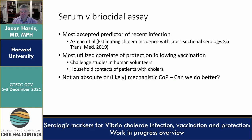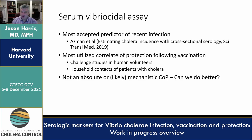The vibriocidal assay is probably the best accepted predictor of recent infection, even to the point where it's used as a diagnostic test in some rare circumstances. Work by Andrew Asman, Daniel Leung, and colleagues showed that this was probably the best tool for sero-epidemiology, in combination with other markers like the cholera toxin response. It is also the most utilized correlate of protection following vaccination, shown in both challenge studies with human volunteers and in household contacts of patients with cholera. Those with pre-existing vibriocidal antibodies have a lower likelihood of becoming infected, and as a result, this marker is used in some bridging studies of cholera vaccines.